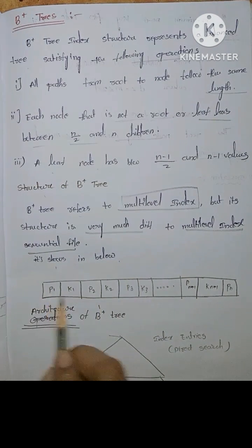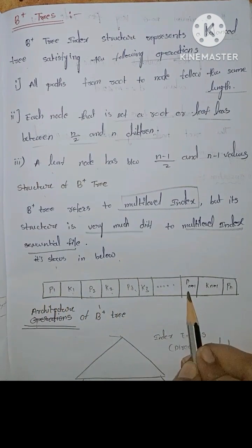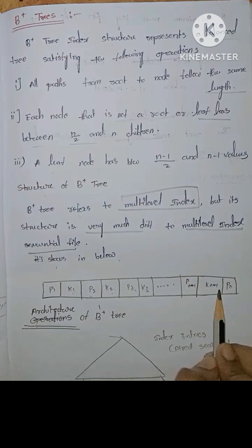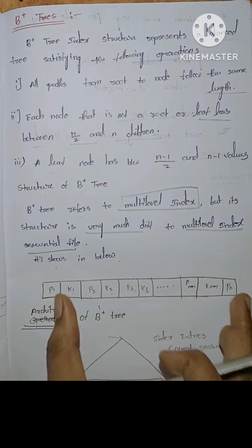It shows in the below P1, K1, P2, K2, P3, K3, up to Pn minus 1, Kn minus 1, Pn. This is the structure of B plus tree.